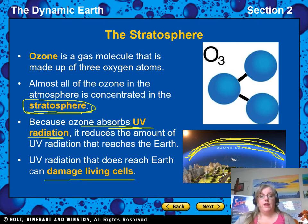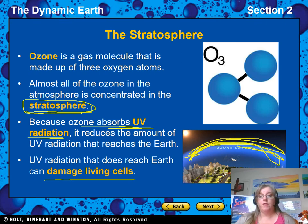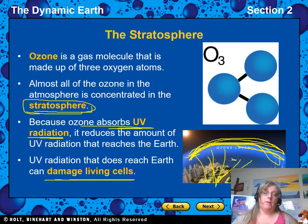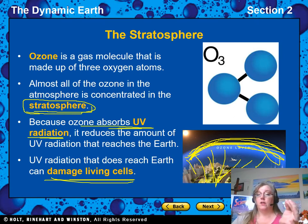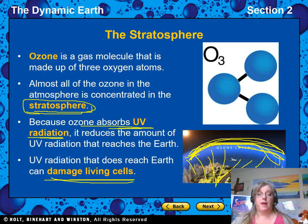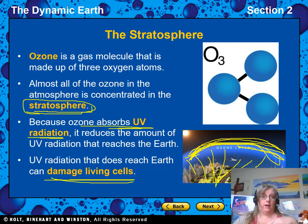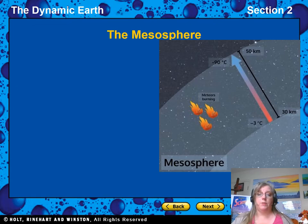The ozone blocks 95% of the ultraviolet radiation from the Sun to keep it from coming down and burning us. If that ultraviolet radiation came down, it would damage living cells. Even that small 5% that gets through can cause sunburn and cancer. If we didn't have the ozone layer to protect us from ultraviolet radiation, life couldn't survive.